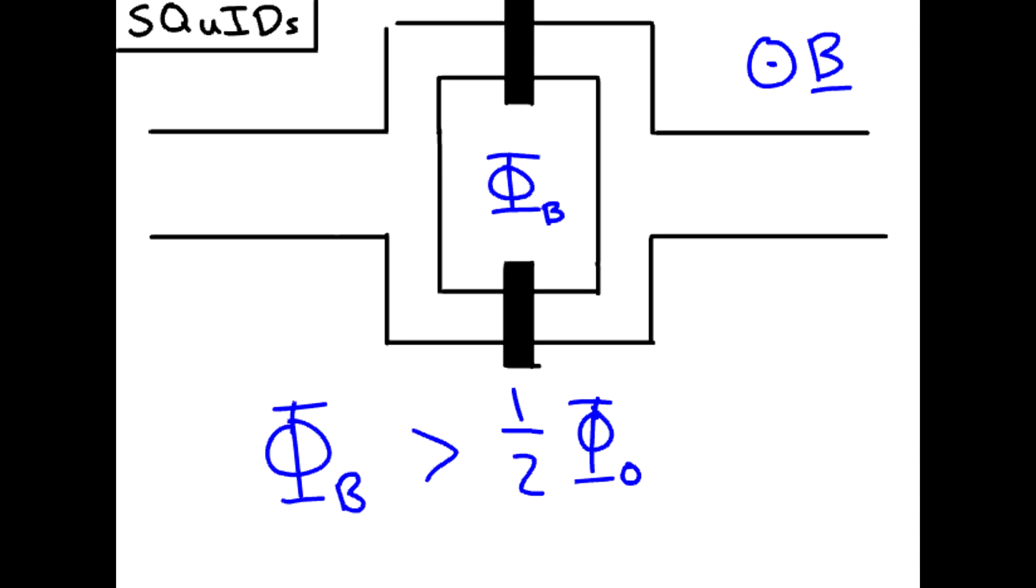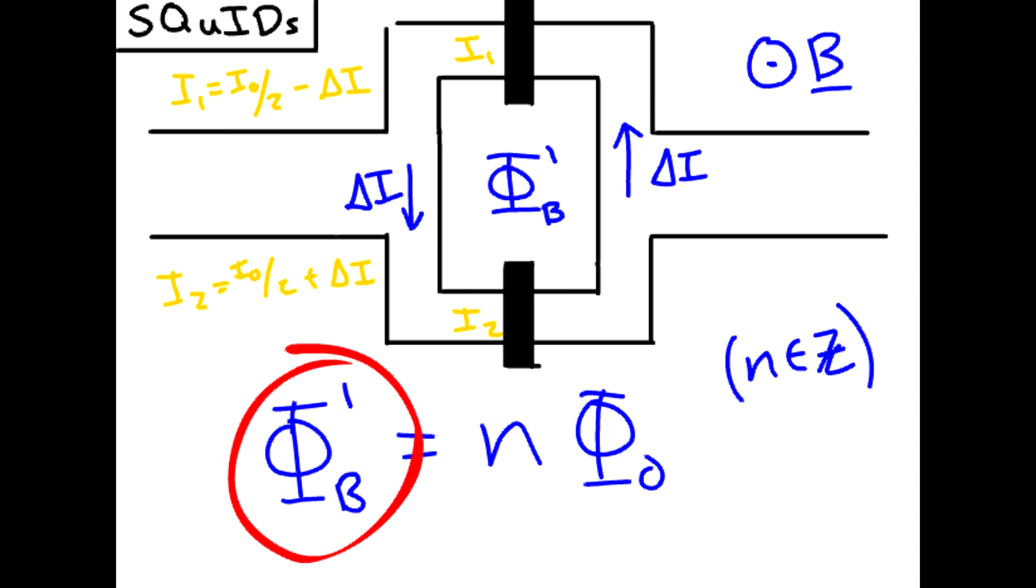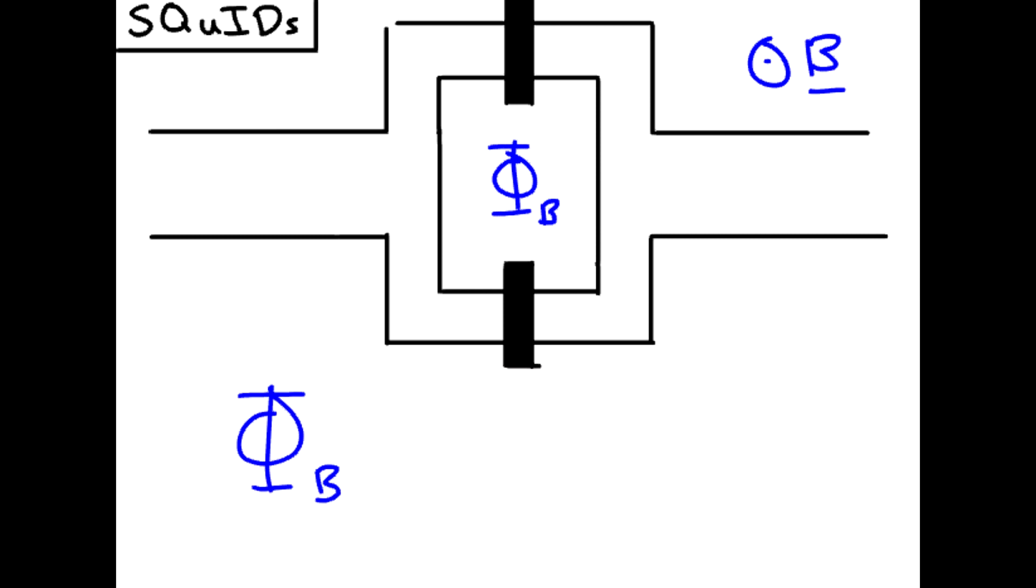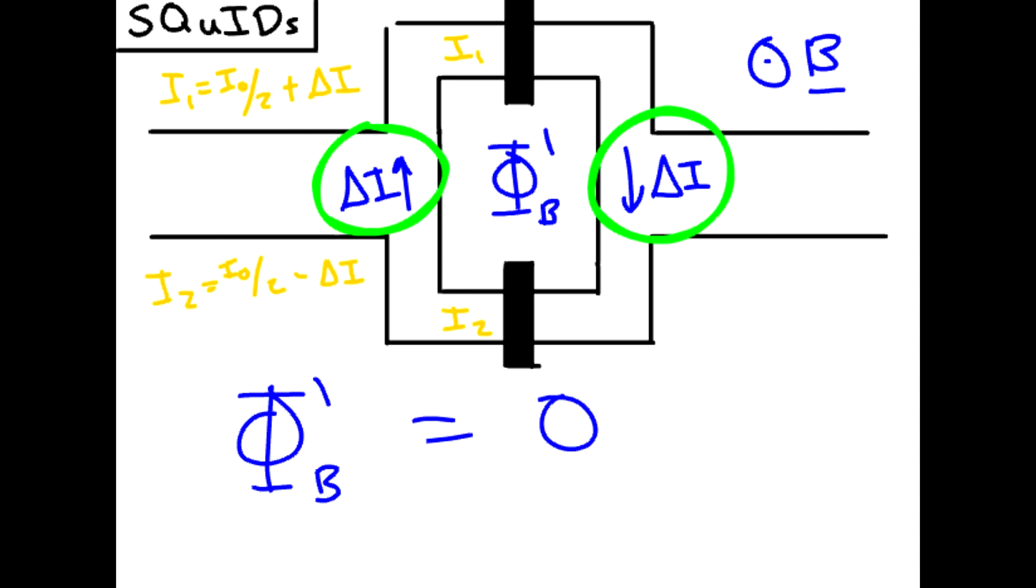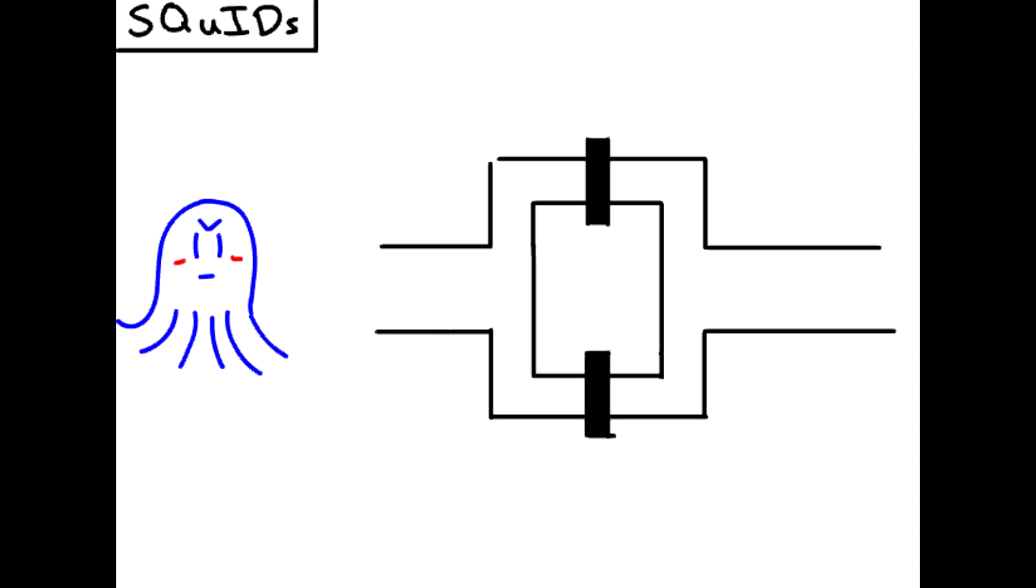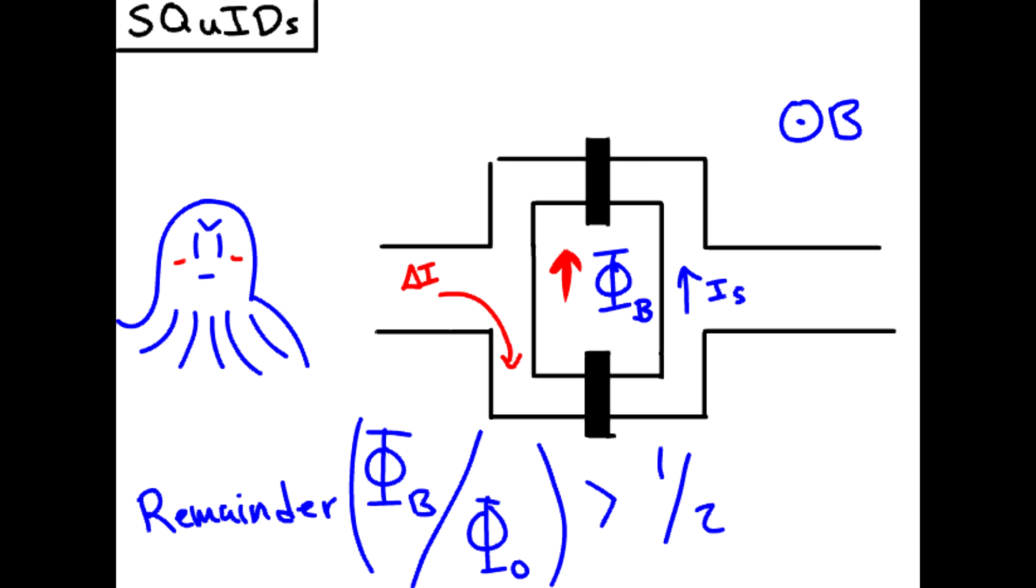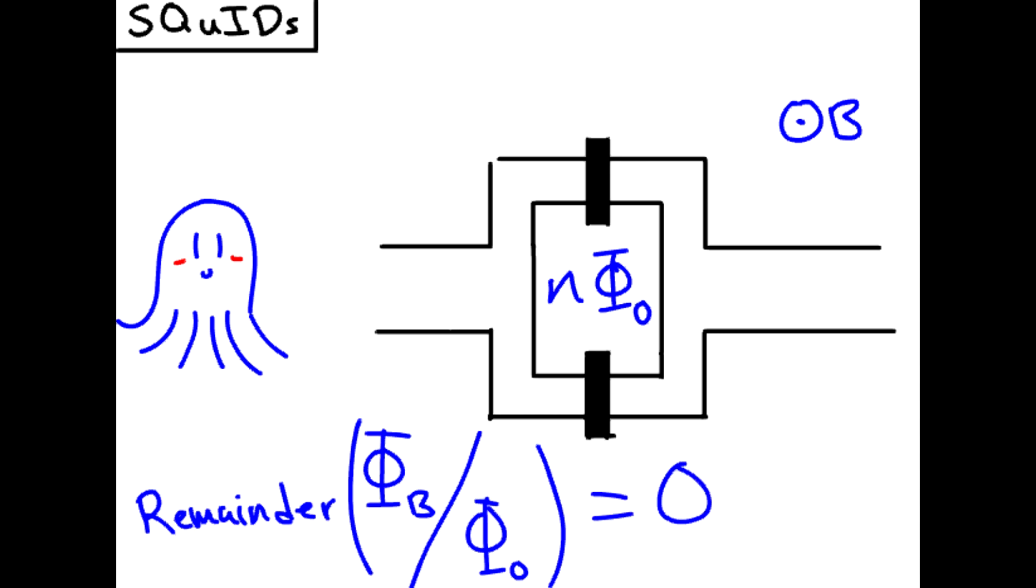If the magnetic flux is over half a flux quanta, phi naught, then the squid, wanting an integer number of phis, will push current such that the total flux is an integer number. Similarly, when the flux is less than half a quanta, it will push current such that the total flux is zero, providing a measurable current shift. As such, the magnetic field isn't causing this current. The squid is assigning more current to one branch to cancel or enhance the flux to achieve an integer flux quanta. As such, the measured current flips between directions as the flux increases.